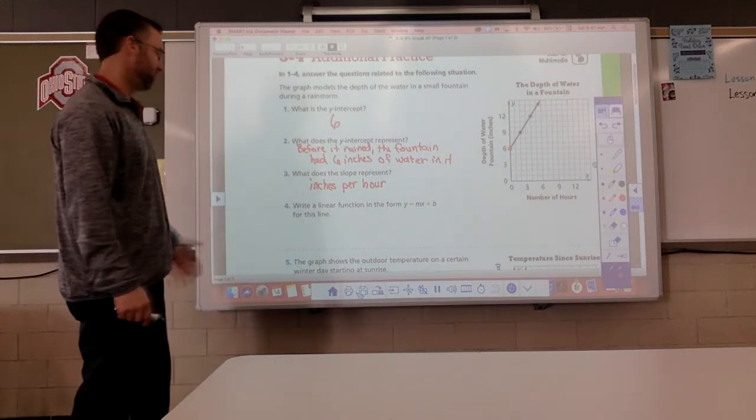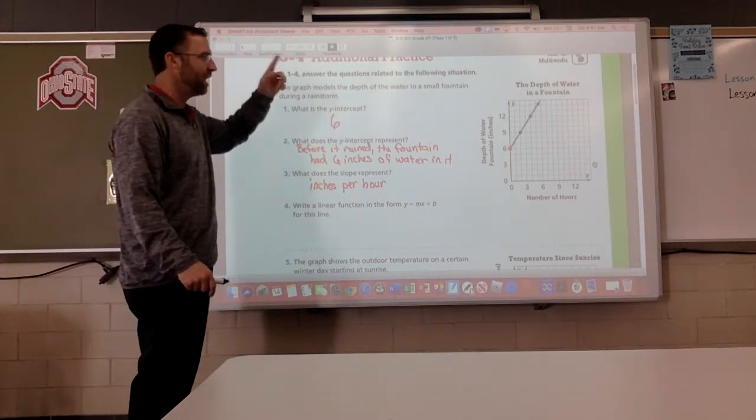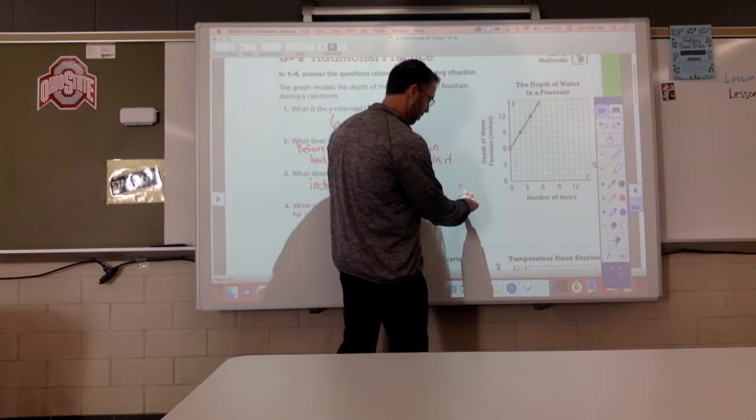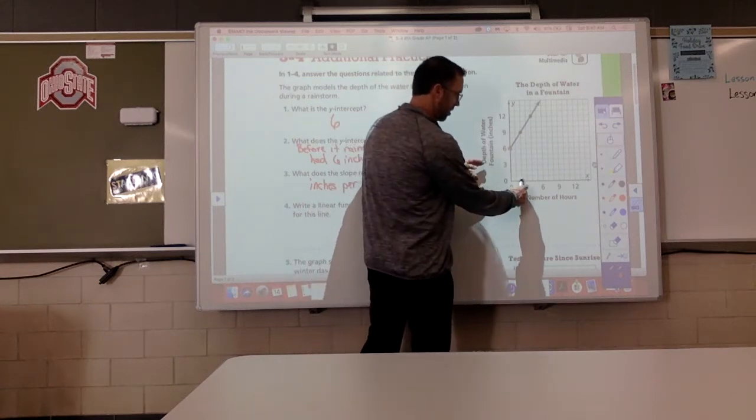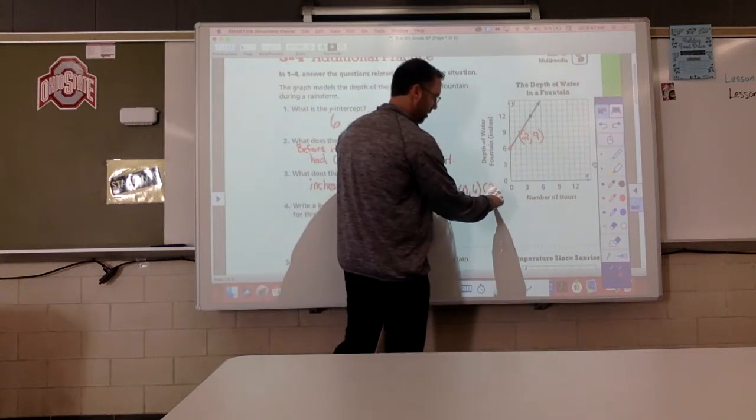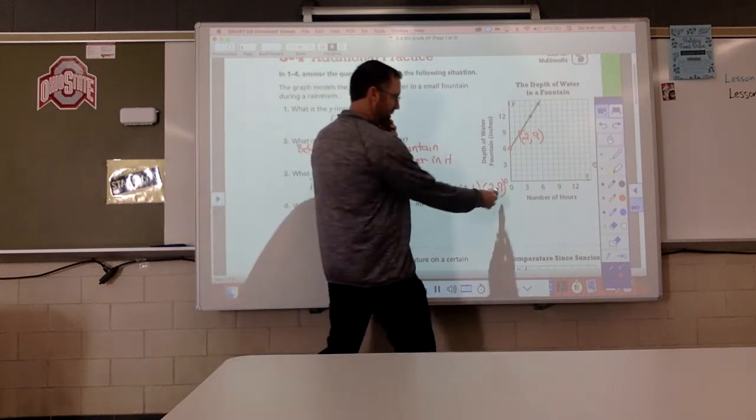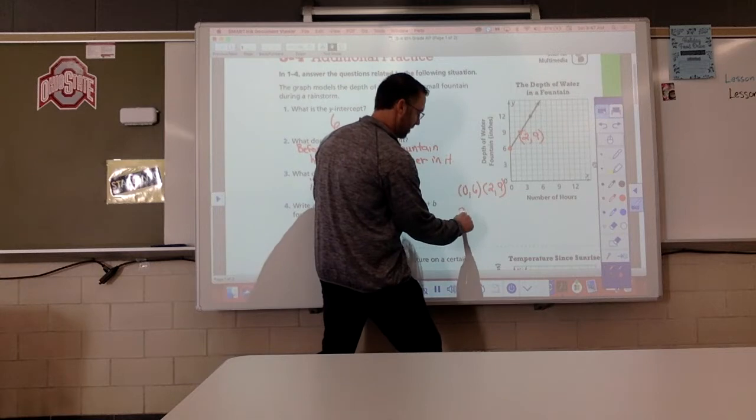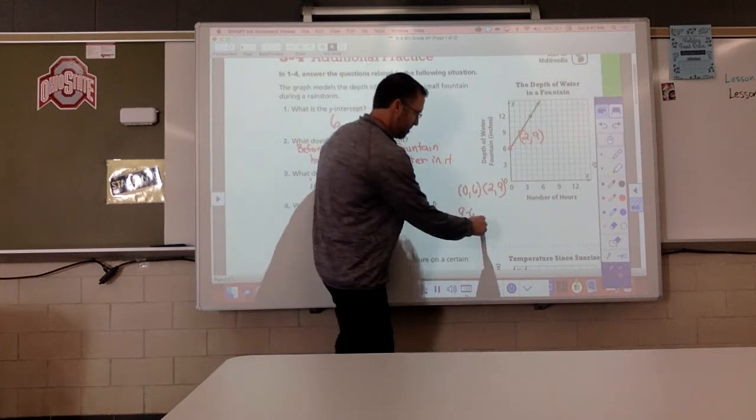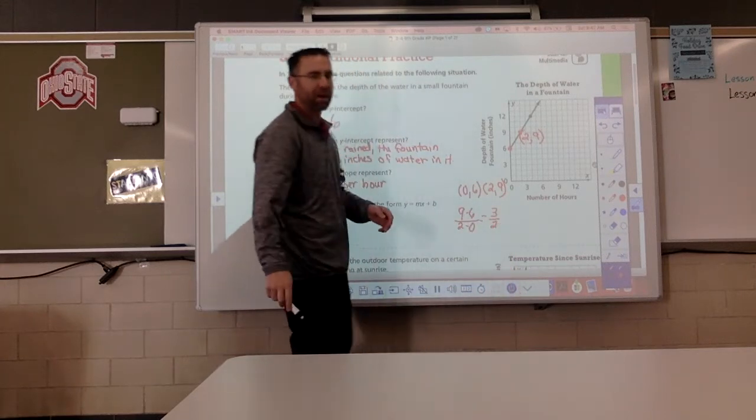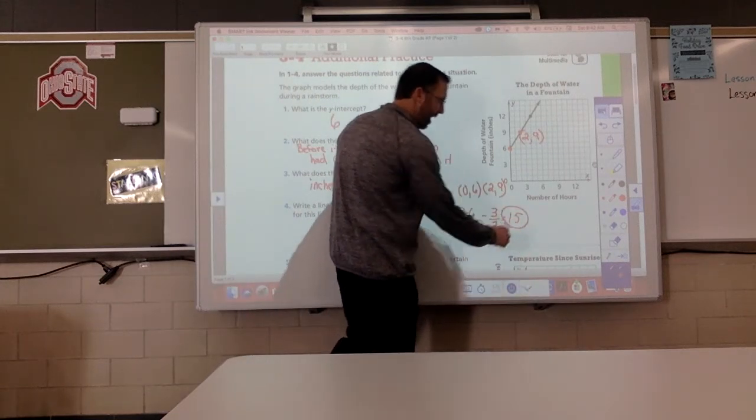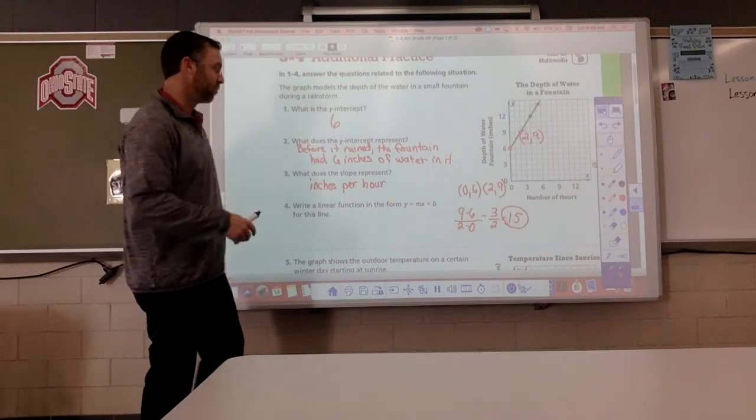So, write a linear function. Well, to write a linear function, we need to know the y-intercept, and we need to know the slope. To find the slope, let's find two ordered pairs. I'll use this ordered pair, 0, 6, this ordered pair, which is over 2, and up 9. Do your subtraction. 9 minus 6 on the top, 2 minus 0 on the bottom. I took my big y value minus small. That gives you 3 over 2. 3 divided by 2, my friends, is 1 and a half. What does that mean? It is gaining 1 and a half inches of depth in that fountain per hour.